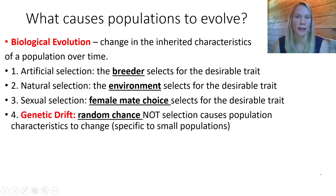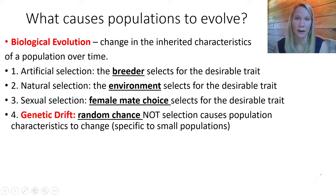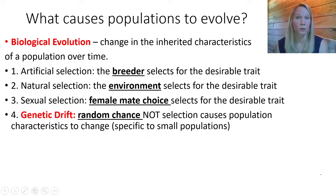Now let's look at the fourth mechanism for biological evolution: genetic drift. Unlike the three mechanisms of selection, genetic drift is not selection — it is based on random events and random chance. It is less common than the other mechanisms, but it can certainly affect inherited characteristics within populations. Genetic drift usually acts on small populations rather than large ones, and there are two types: the founder effect and the bottleneck effect.